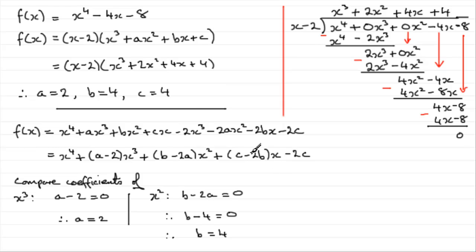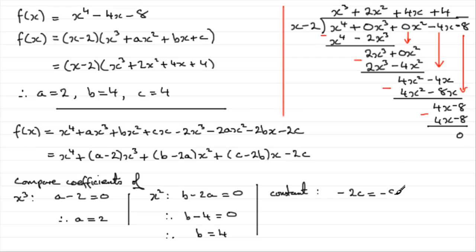To get c, looking at the constant term: we have minus 2c, and the constant in f of x is minus 8. So minus 2c equals minus 8, dividing both sides by minus 2 gives c equals 4. That checks out with what we found before. Hopefully you can see both methods and take whichever one you prefer. I always prefer algebraic long division.